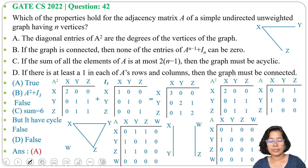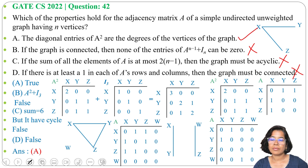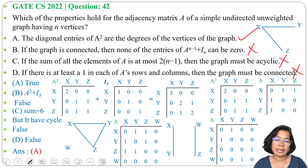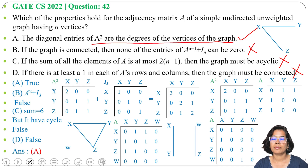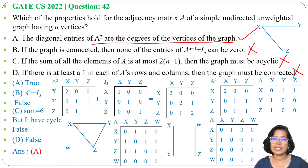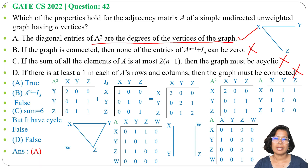Option B is false, option C is false, option D is false. Only option A is correct: the diagonal entries of A² are the degrees of the vertices of the graph. I have already discussed the adjacency matrix — just go through the lecture. If this lecture was helpful, please like, share, and subscribe. Thank you.